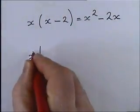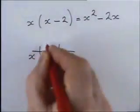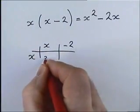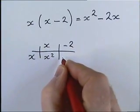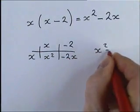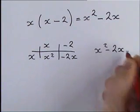Okay, or the other way, we split the x minus 2 into x and minus 2. And x times by x is x squared and x times by minus 2 is minus 2x. So, we get x squared minus 2x.